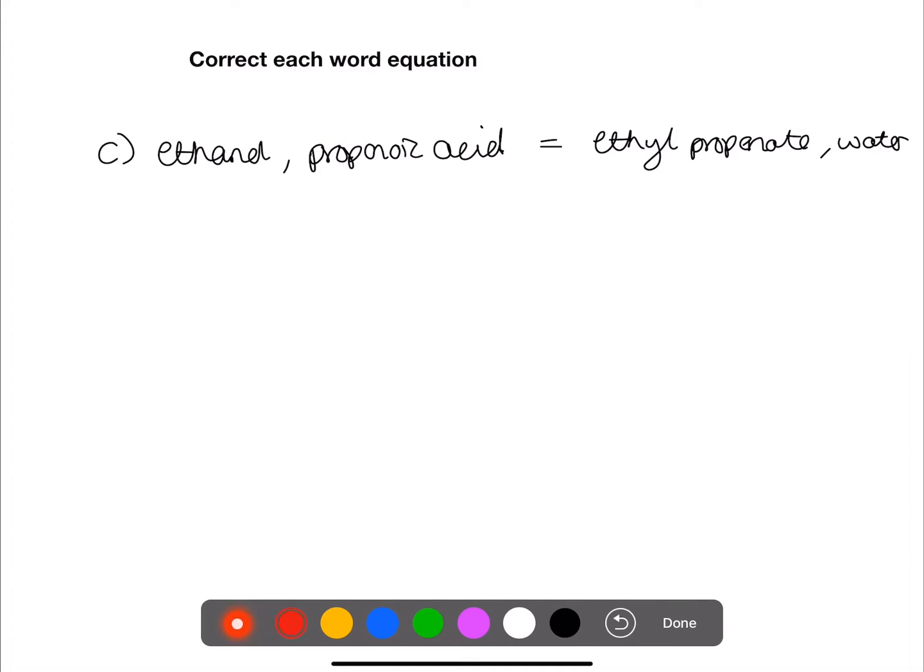So in this final example, we have commas separating our reactants and products and we have an equal sign. So we should have plus signs between the reactants and between the products and we should have an arrow between the reactants and the products themselves.